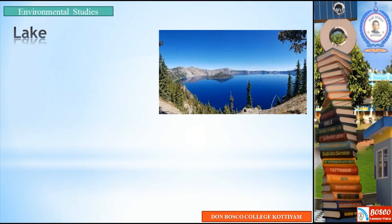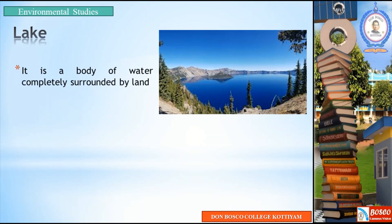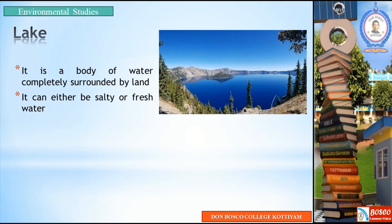Another type of stagnant ecosystem is a lake. It is a body of water completely surrounded by land. A lake is comparatively larger than a pond. It can either be salty or freshwater.